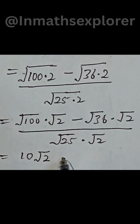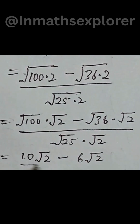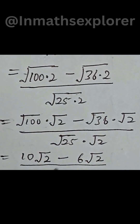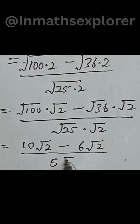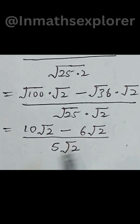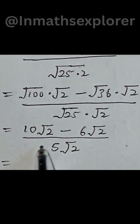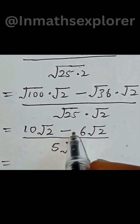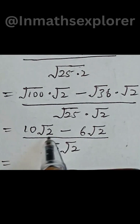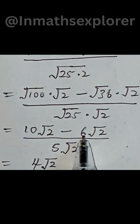So we have square root of 100 equal to 10, square root of 2, minus square root of 36 equal to 6, then square root of 2, all over square root of 25 equal to 5, then square root of 2. So 10 square root 2 minus 6 square root 2 gives us 4 square root 2.